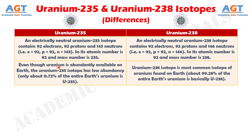Number 2. Even though uranium is abundantly available on Earth, the Uranium-235 isotope has low abundancy. Only about 0.72% of the entire Earth's uranium is Uranium-235. Whereas Uranium-238 is the most common isotope of uranium found on Earth — about 99.28% of the entire Earth's uranium is Uranium-238.